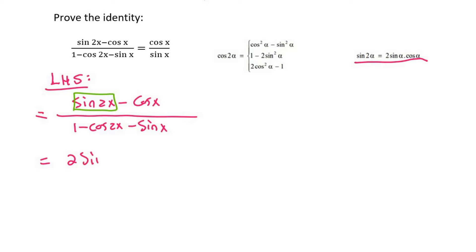So that's going to become 2 sin x cos x minus cos x over 1 minus cos 2x minus sin x.